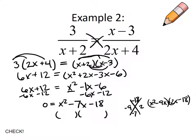If I do grouping, I would have an x minus 9, take out a 2x minus 9. My factors are x plus 2 and x minus 9.